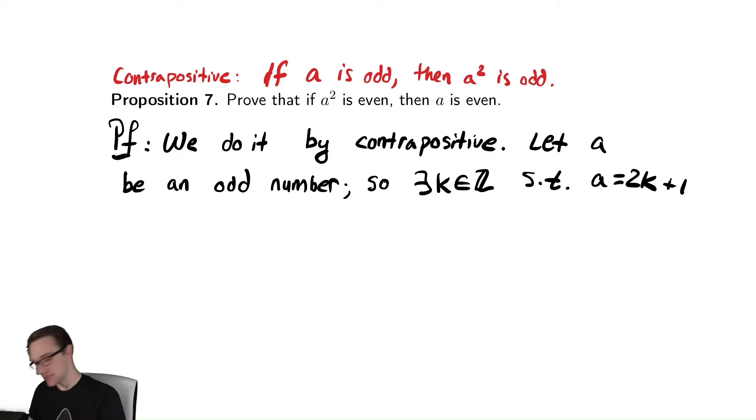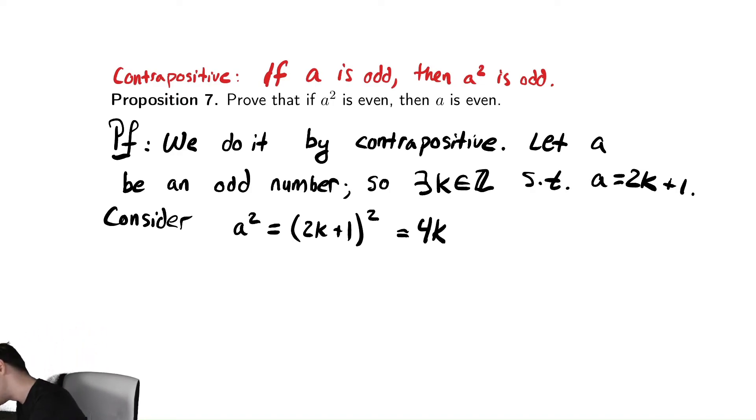And now we're going to start working with A squared. Consider A squared is equal to 2k plus 1 quantity squared, which is equal to, we've squared very similar expressions in previous videos, so I'll do it a little faster here. This should be 4k squared plus 4k plus 1.